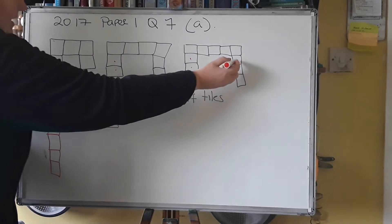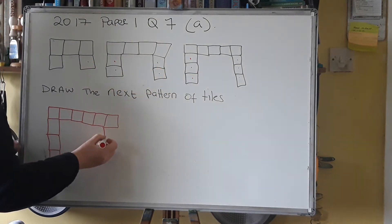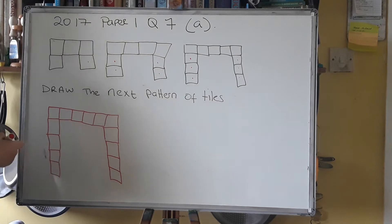And same on this side, 3, 2, 1, so this will be 4. 1, 2, 3, 4. Okay, so nice and easy, just draw the next pattern.